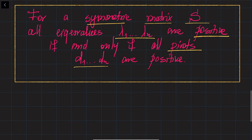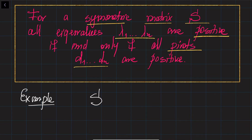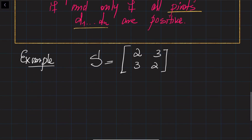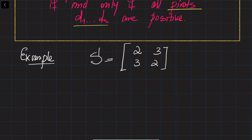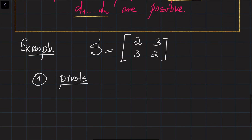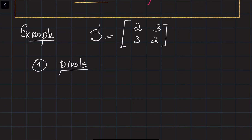This is a really important statement because it allows us to determine whether the eigenvalues of a symmetric matrix are positive without actually finding them. Let's do an example. Say we are given the symmetric matrix S with entries 2, 3, 3, 2. We would like to find the pivots first and then find the eigenvalues.